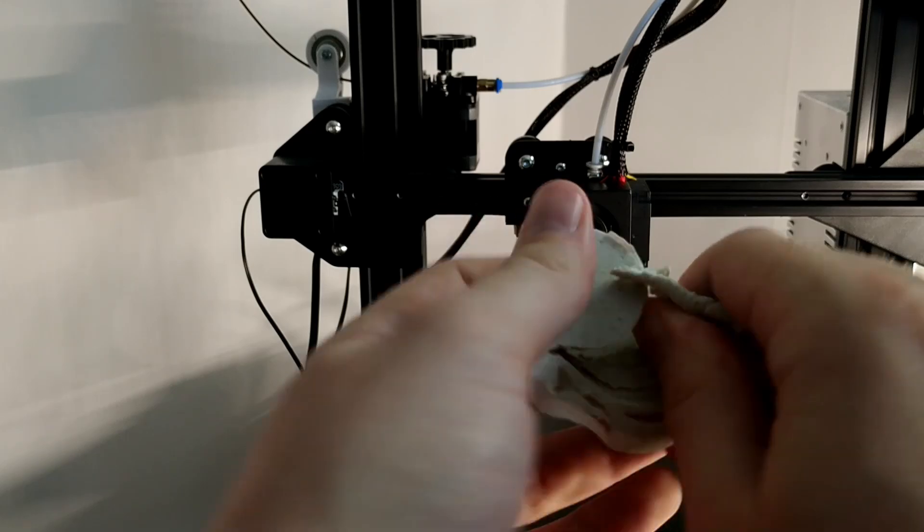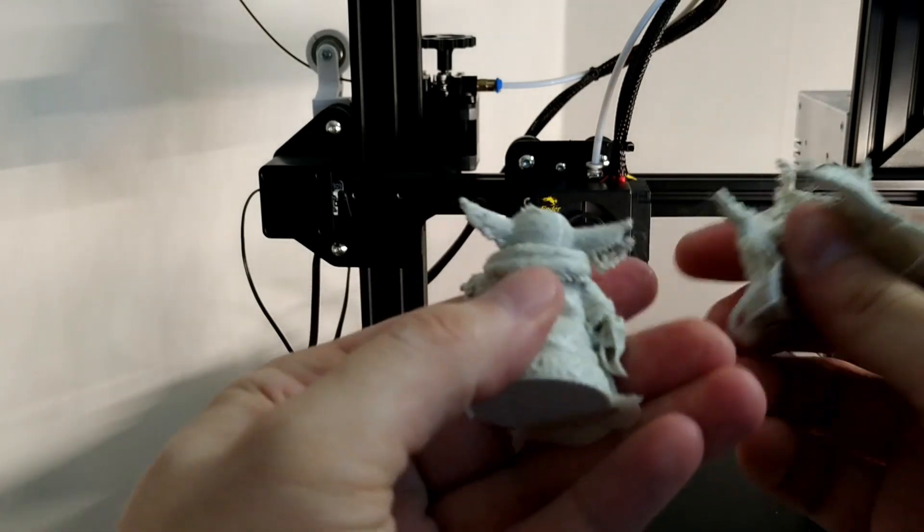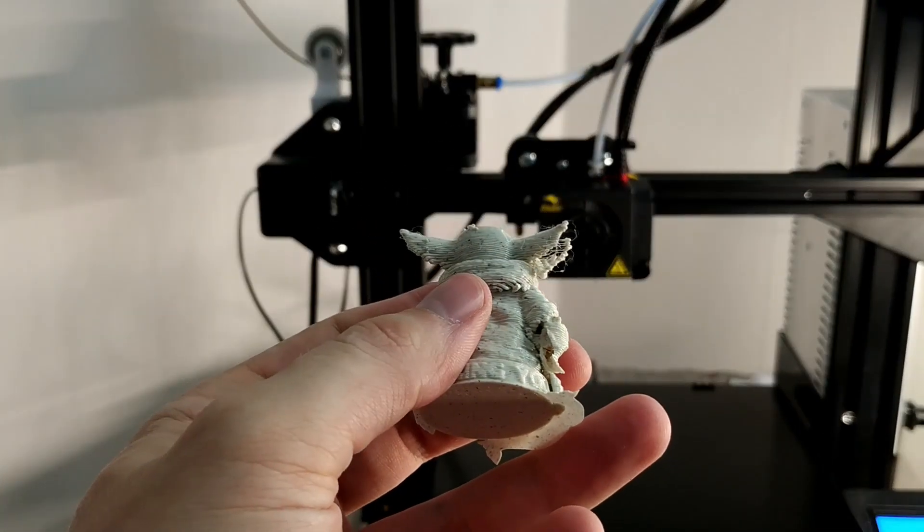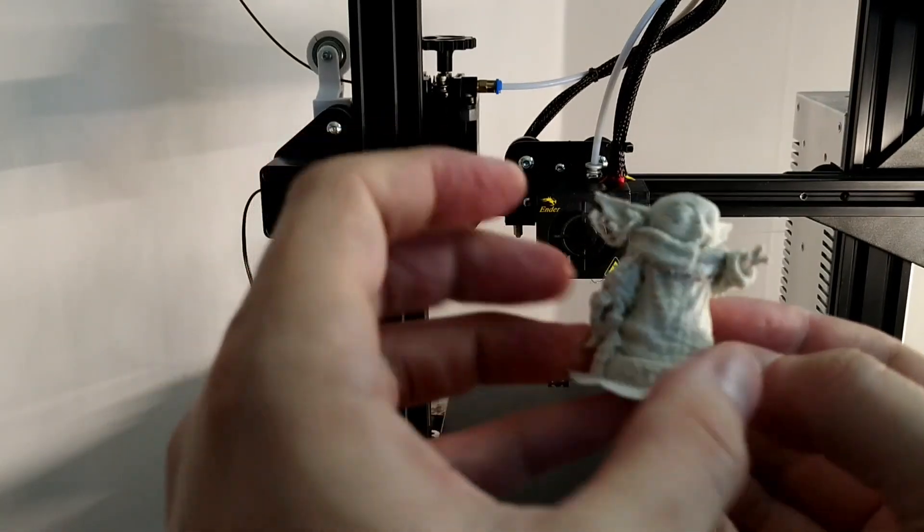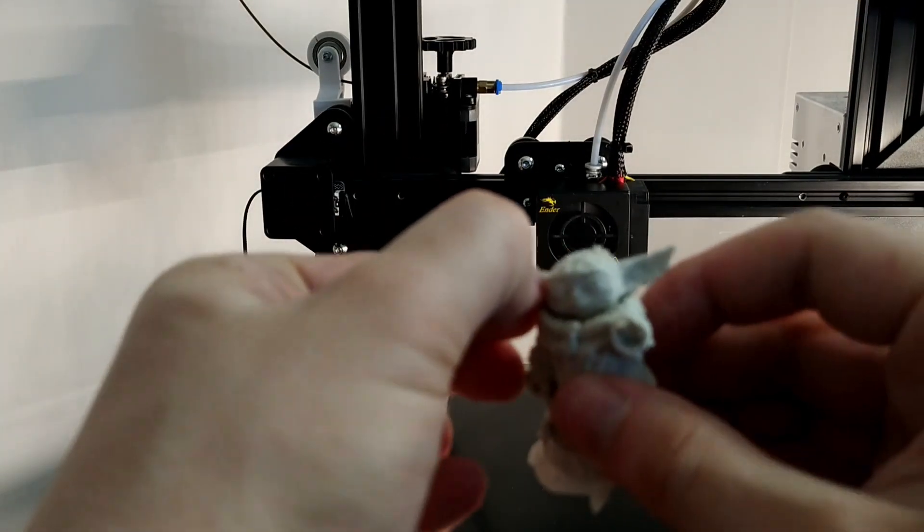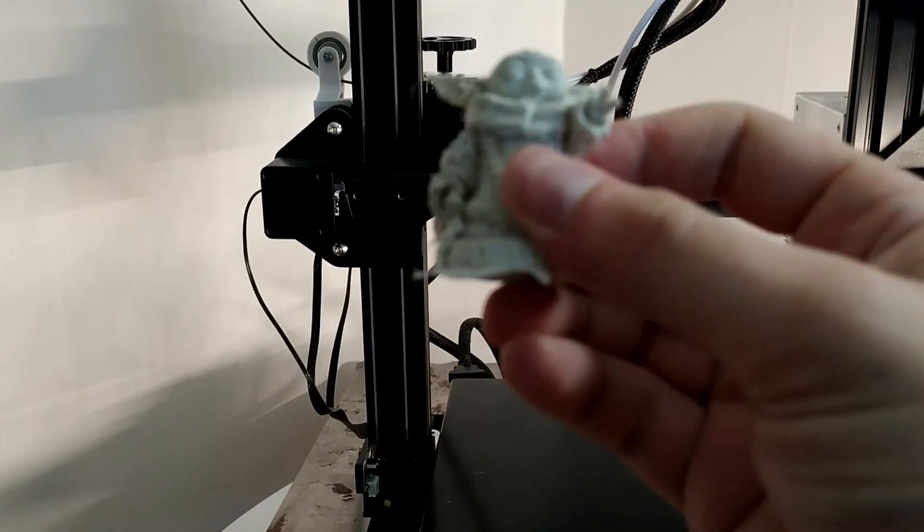When I print fine near stuff, like this, or especially leather stamps, I will print with a 0.2mm nozzle. The standard 0.4 is never used anymore almost.